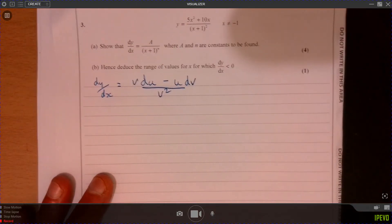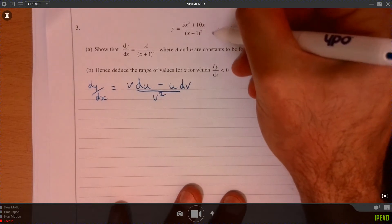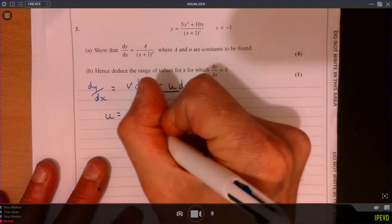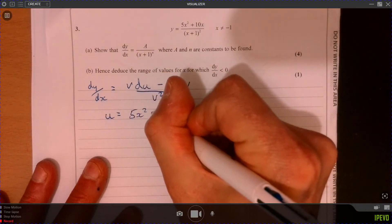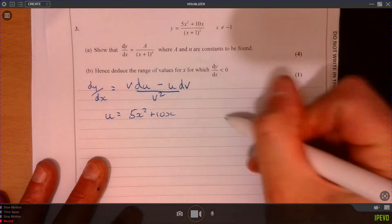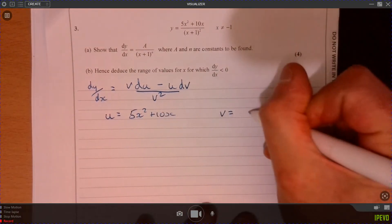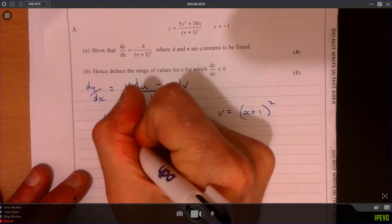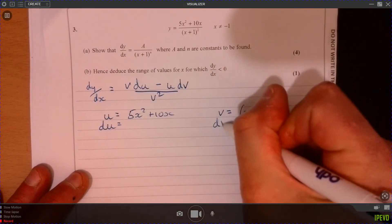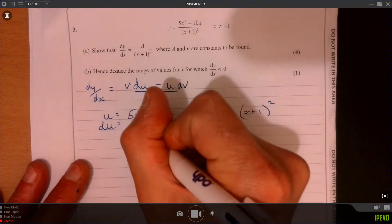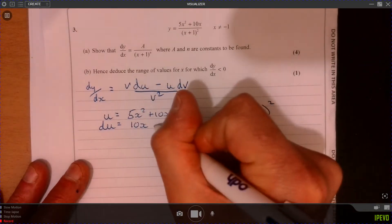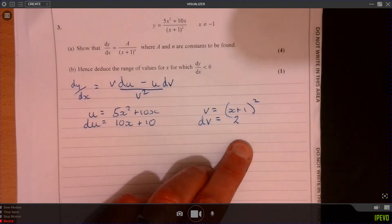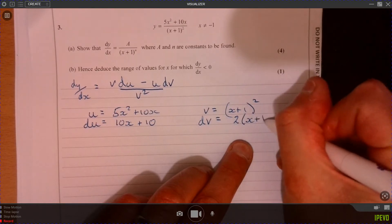What do I do on these? Remember, it's U over V. What I do is I just write everything down that I know. So I know U is equal to 5x squared plus 10x. And I know that V equals x plus 1 squared. So let's write down du. Let's write down dv. So du, that's the easy one. We've got 10x plus 10 and dv is going to be 2 and it's x plus 1 like that.